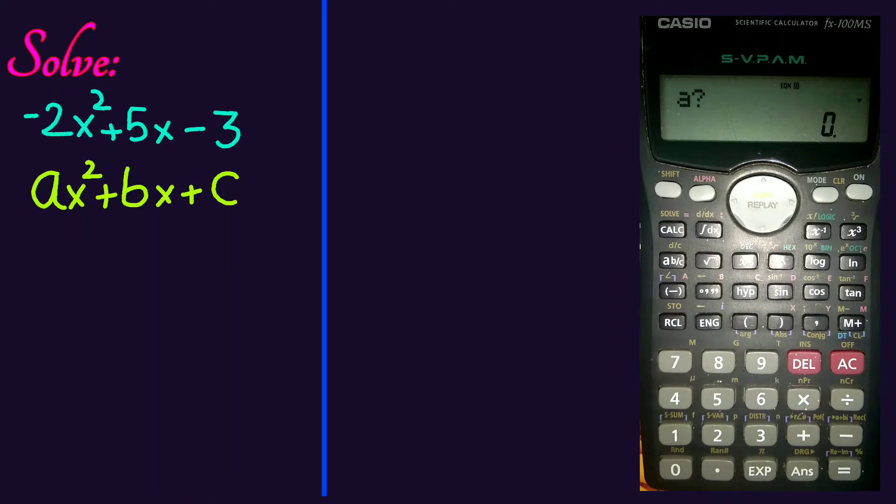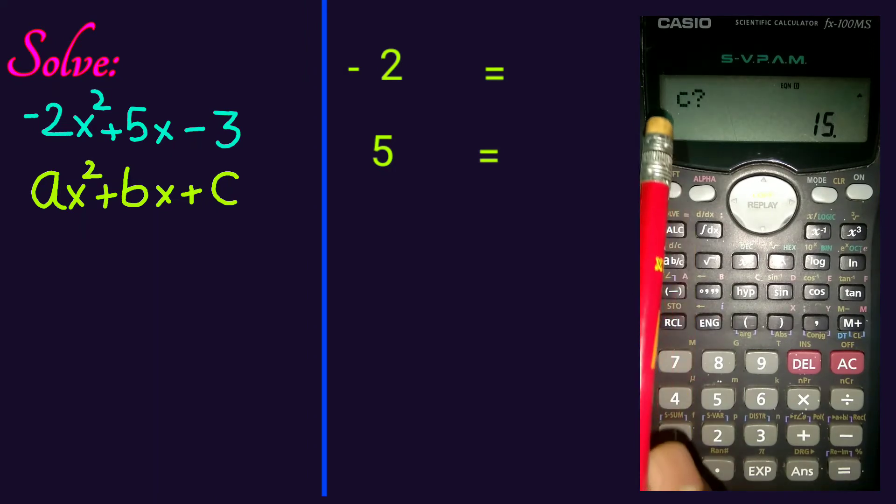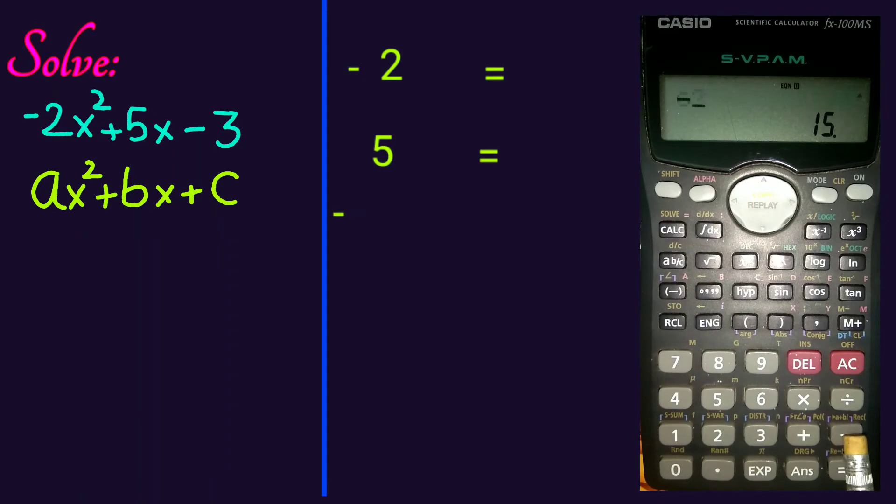The value of a is negative 2. Press minus 2 and equal key. The value of b is 5. Press 5 and equal key. The value of c is negative 3. Press minus 3 and equal key.